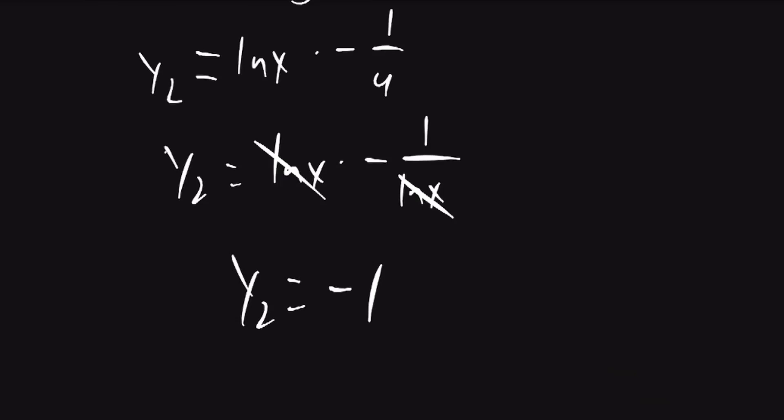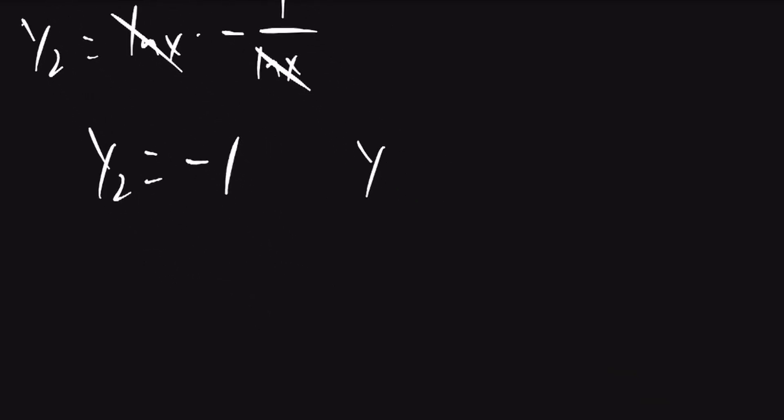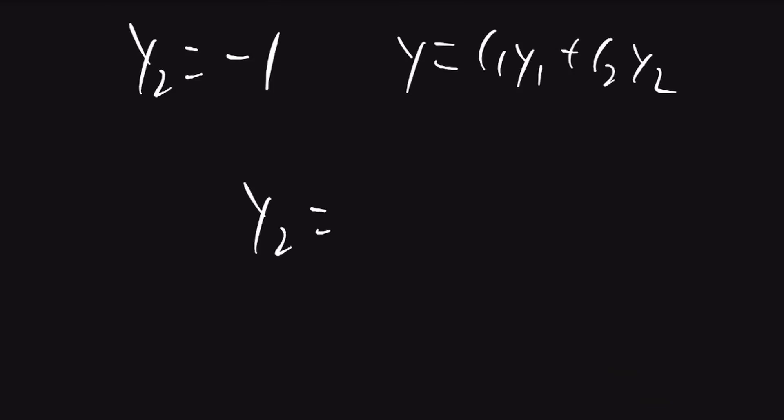So y2 will be equal to negative 1. Because the final answer will be written in the form y equals c1 times y1 plus c2 times y2, it doesn't actually matter if this is positive or negative. So our final answer is just going to be 1.